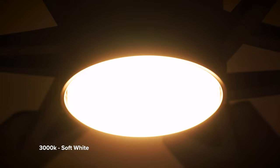Press the correlated color temperature button to cycle through the light color temperature options. The light can be set to 3000K soft white, 4000K bright white, and 5000K daylight.